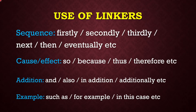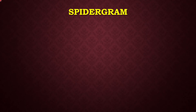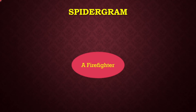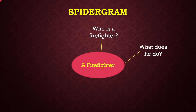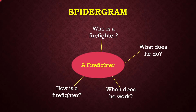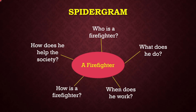Now let me show you the spider graph, which I already showed in my previous video. The topic given is a firefighter, and there are a few points based on which you will write your paragraph. The points are: who is a firefighter, what does he do, when does he work, how is a firefighter, and how does he help the society. Now let me show you the example of a paragraph.